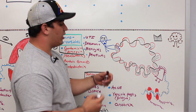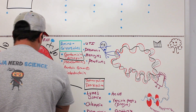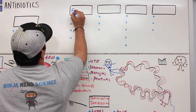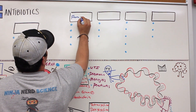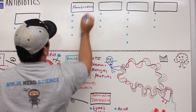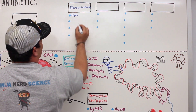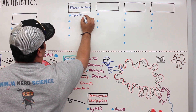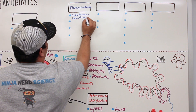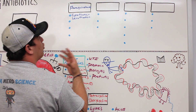The first group of drugs we're going to talk about is quinolones, and more commonly fluoroquinolones. The different types of fluoroquinolones include ciprofloxacin — cipro — and levofloxacin. These are some of the specific types of quinolones.